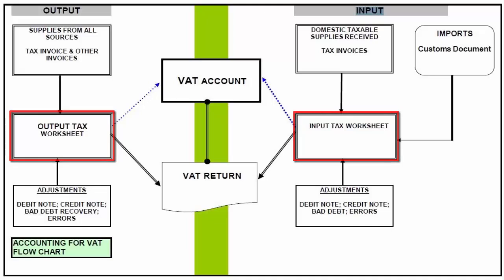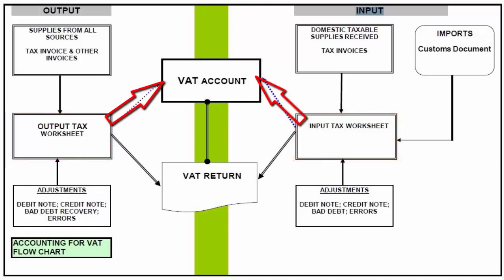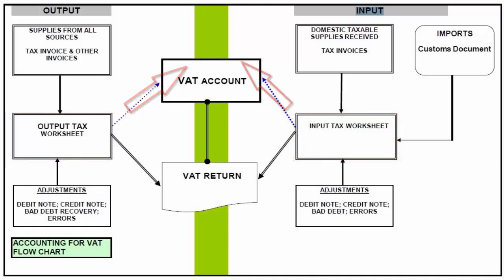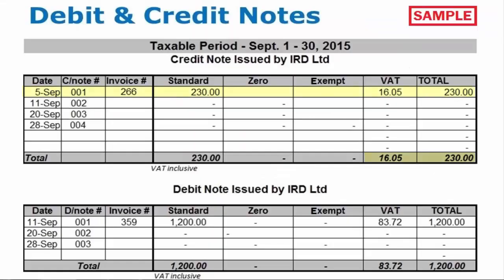A summary of your input and output transactions should then be transferred to your VAT account. Any adjustments such as debit, on-credit notes or errors should also be taken into consideration. These figures should then be used to complete your VAT return.